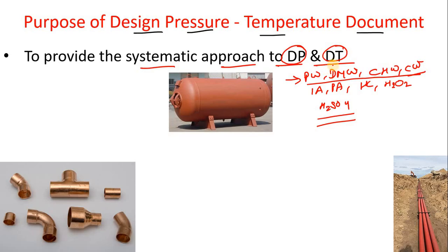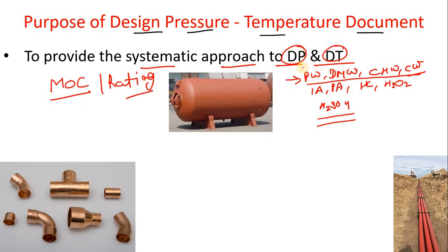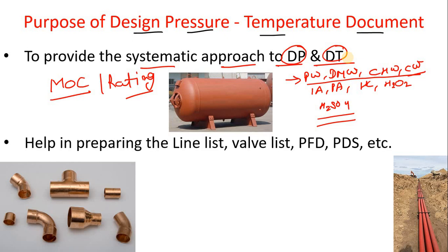This document gives you the design pressure for a given material of construction (MOC). MOC plays an important role — for which fluid and which MOC you are using determines the design condition. We also classify based on MOC and rating, and then assign the design pressure and design temperature. When you know the design pressure and design temperature, you also know the rating and the MOC, which helps a lot in preparing other documents.